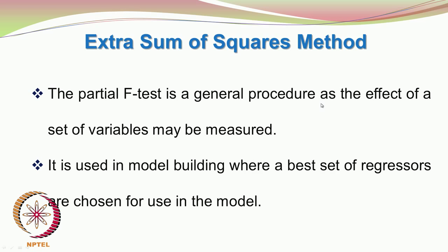The partial F test is a general procedure — the effect of a set of variables can be measured. It is used in model building to choose the best set of regressors for the model. By doing this analysis, you can identify the best set of variables having maximum impact on the response, so that you build an economical, compact, and efficient model including only the regressor variables that actually influence the process, while excluding others.